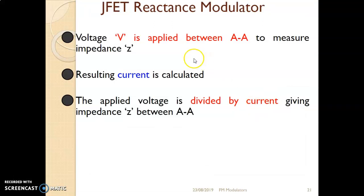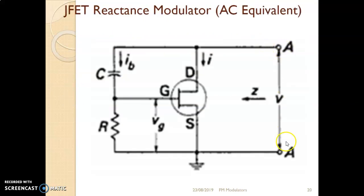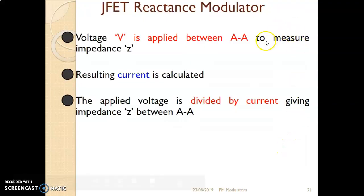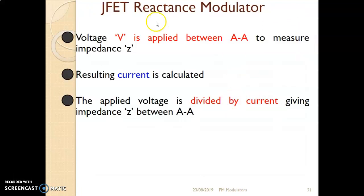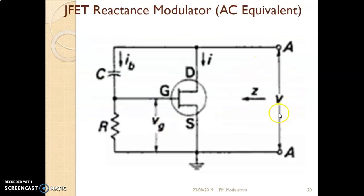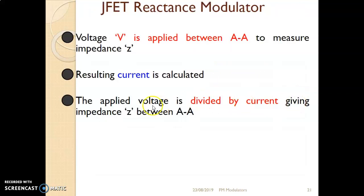The steps we follow are: apply voltage V between terminals AA, then measure impedance Z looking from that terminal. The resulting current I is calculated, and the impedance is Z = V/I — that is, applied voltage divided by current gives us the impedance.